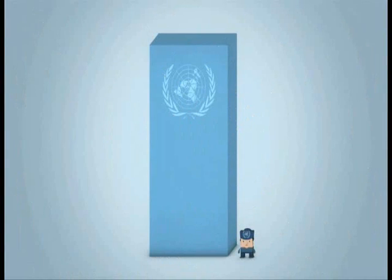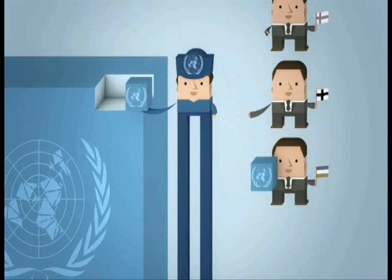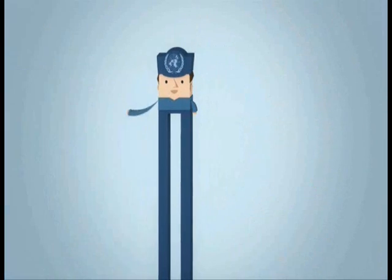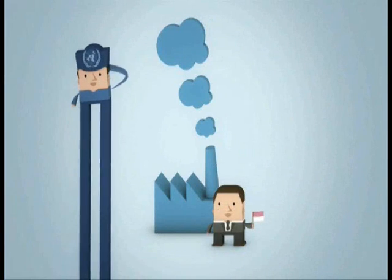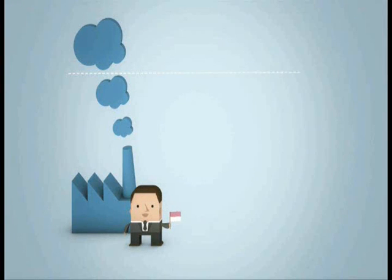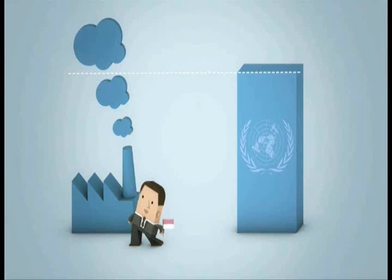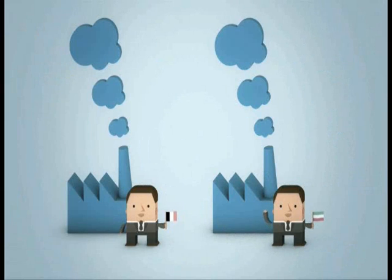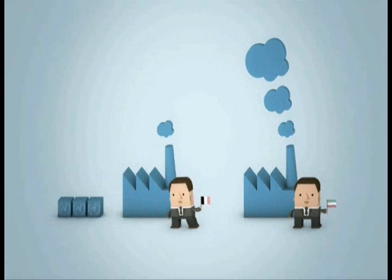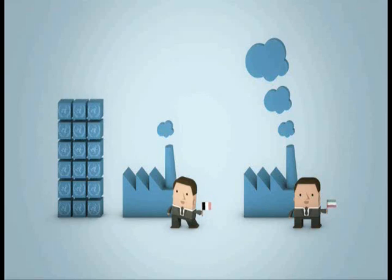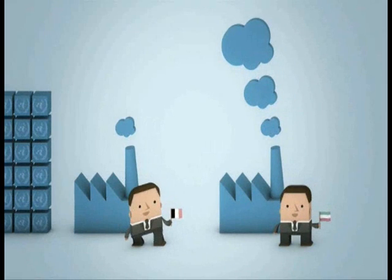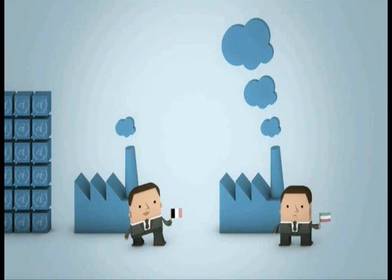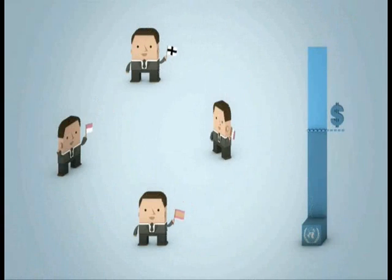The UN distributes quotas of carbon units to those industrialized countries that have signed the treaty. These units set a limit on the level of emissions. This limit is equivalent to the total amount of CO2 that these countries are permitted to emit, and which is less than the anticipated emissions. Some countries are so successful in reducing their emissions that they simply don't need all the carbon units they've been allocated, while other countries may struggle to reduce their emissions and need more units.